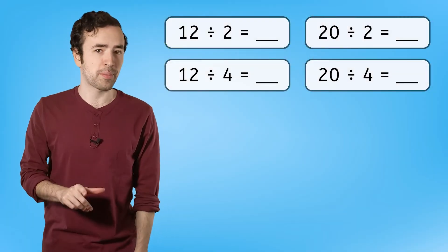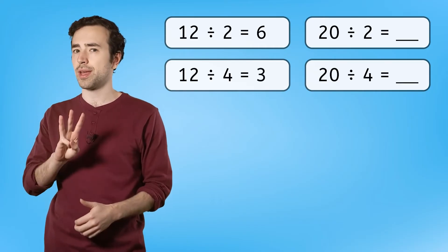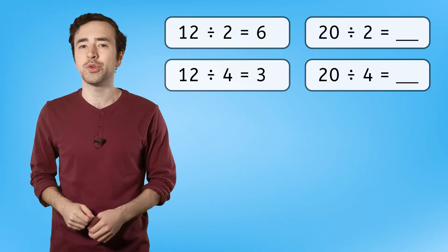Okay. 12 divided by 2 equals 6, while 12 divided by 4 equals 3. And 20 divided by 2 equals 10, while 20 divided by 4 equals 5.